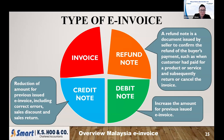Credit note and debit note are documents many companies are already familiar with. A credit note is issued when there's a sales discount or sales return — whenever you want to reduce a previous e-invoice amount. A debit note is used to increase a previous e-invoice amount, such as when an amount was omitted or understated.